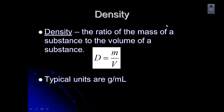With density, typical units are grams per milliliter, although sometimes with gases grams per liter is more common because gases are very light, so they have very low densities.